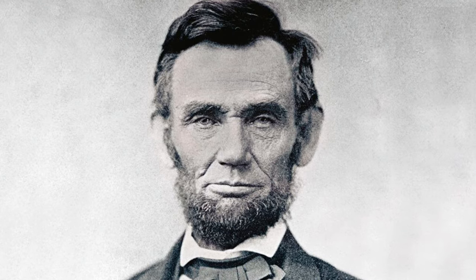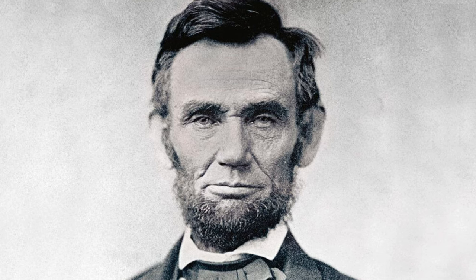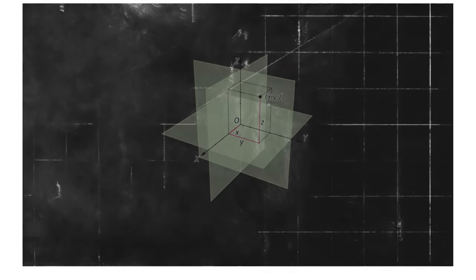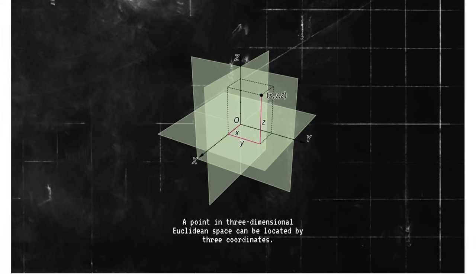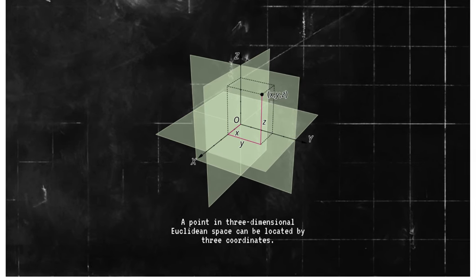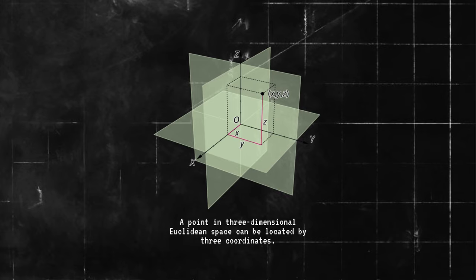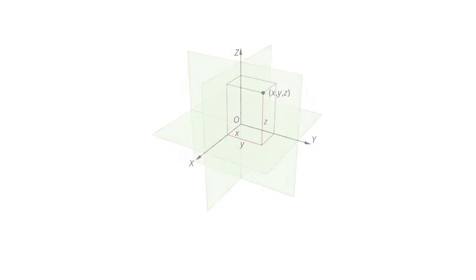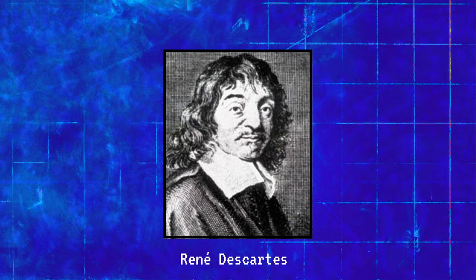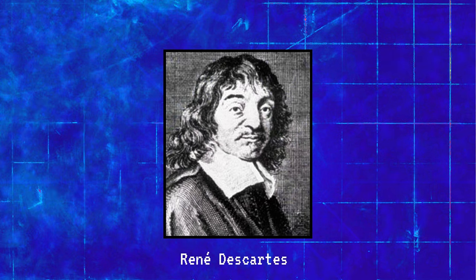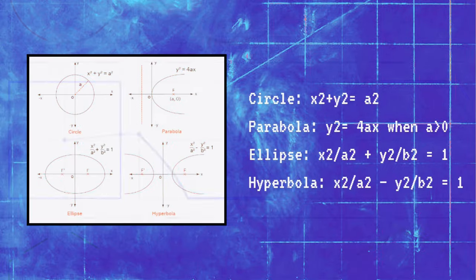Abraham Lincoln reportedly credited his mastery of sound legal argumentation to his study of Euclid. In Euclid's methodology, geometric concepts were primarily conveyed through spatial diagrams. This visual approach to geometry remained the standard for centuries, until the 1630s when René Descartes introduced a revolutionary idea. Descartes demonstrated that geometric principles could be expressed using mathematical formulas, thereby bridging the gap between geometry and algebra, and paving the way for analytical geometry.